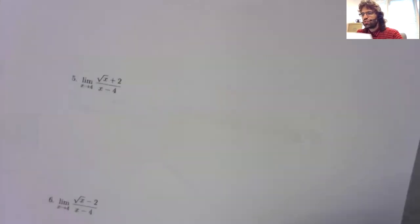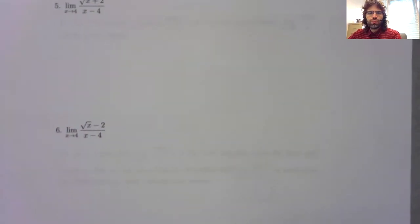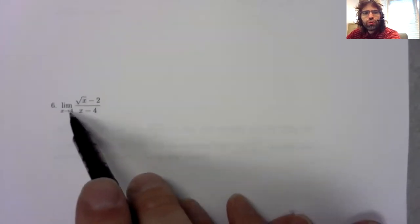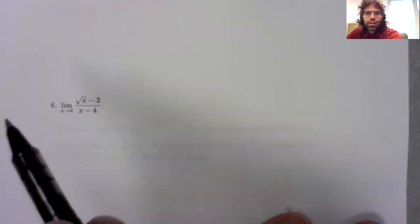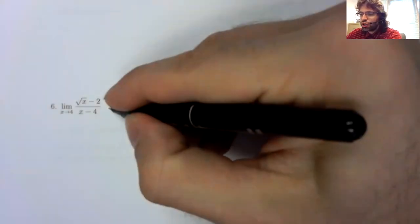The next problem we did in class was six. Again, if we just plug four in, if we didn't get a division by zero error, that would be valid. Everything is continuous, but we do get a division by zero error.